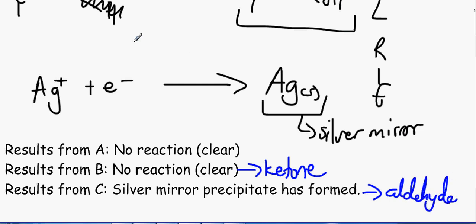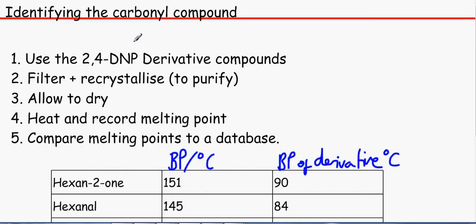Now if we want to actually find out what ketone, what compound it is, or what aldehyde it is, we follow a series of steps. First of all, we go back to our 2,4-DNP derivative compounds, the ones with the yellow or orange precipitate. And we filter and we crystallise it, because this is not pure.